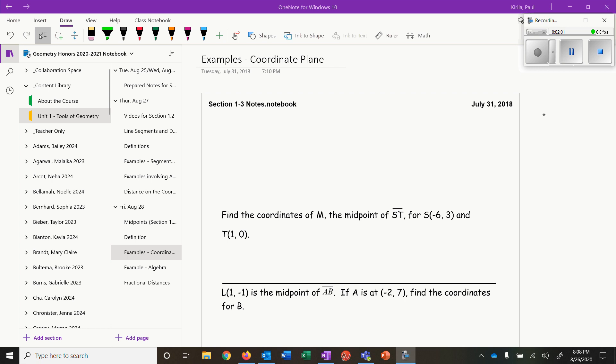So here we want to find the coordinates of M, the midpoint of segment ST, where S is at (-6, 3) and T is at (1, 0). I'm not given a picture so I'm going to draw a quick sketch here. (-6, 3) is right here and (1, 0) for T is right here. Those are the endpoints for the segment and I need to know where's the midpoint. I don't know the midpoint M, but I do know that it has to be the average of the endpoints. So the way I find averages—I'm going to have to find the average of the x's and the average of the y's.